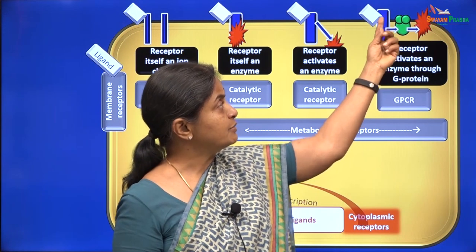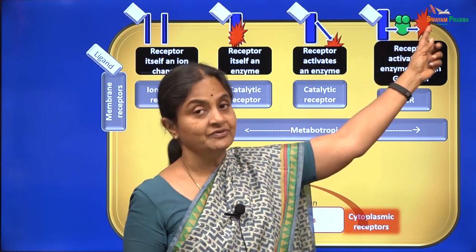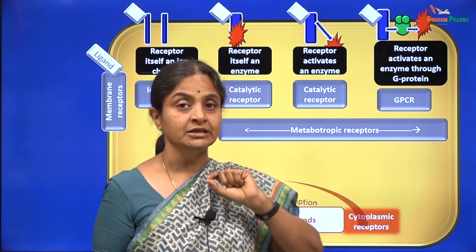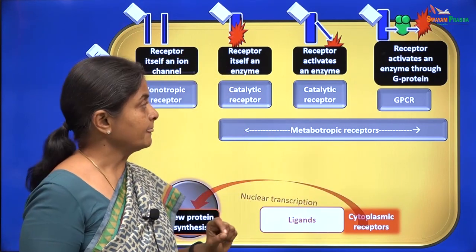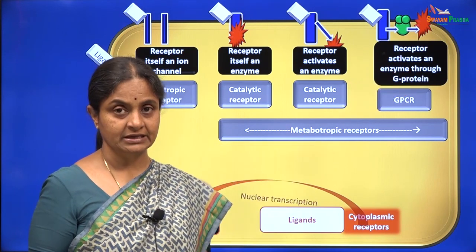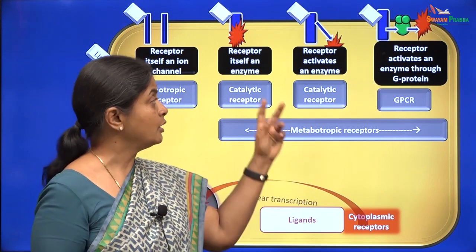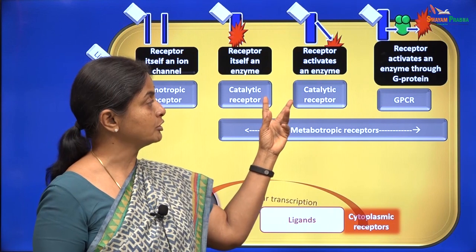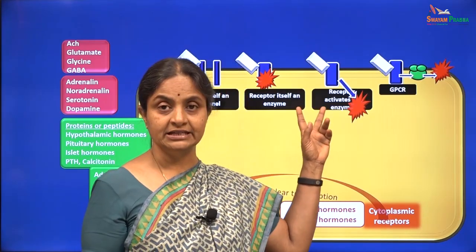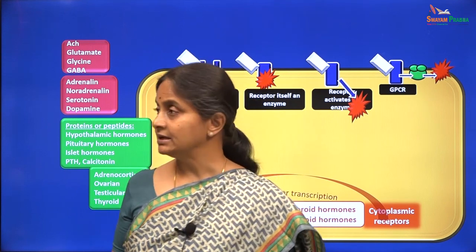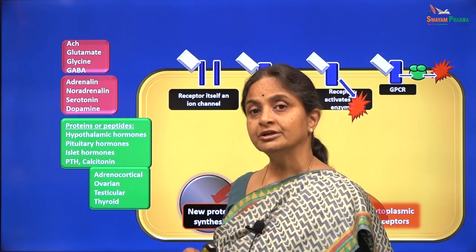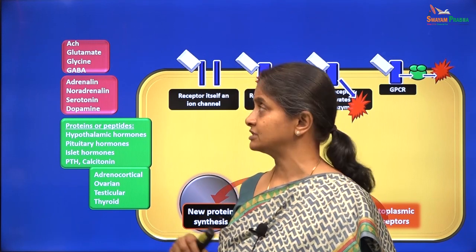The G-protein coupled receptor also activates a membrane enzyme but through an intermediate G-protein. Having considered G-protein coupled receptors in some detail so far, we will now move on to catalytic receptors. Before we look at details of the catalytic receptors, take a look at a list of important neurotransmitters and hormones.